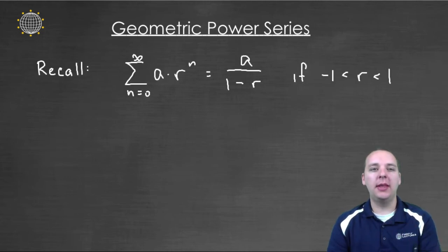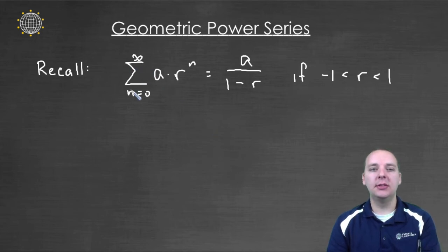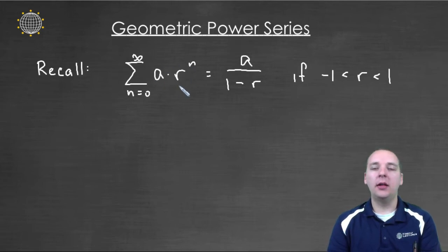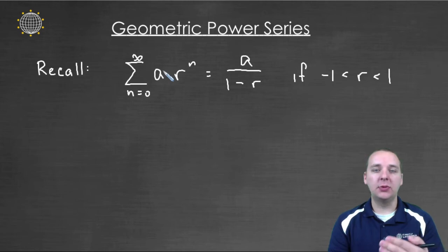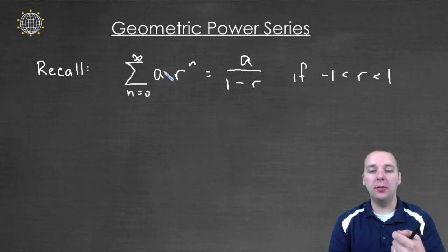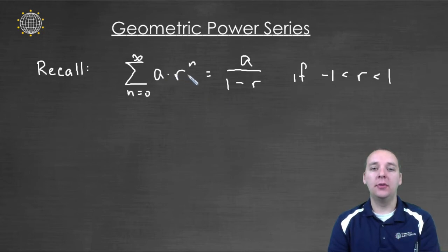Let's first remember what a geometric series looks like. This is the sum from zero to infinity of a times r to the n. These converge if r is between plus or minus one. And the geometric series test is one of the few tests that actually tells us what the terms add up to — it converges to a over one minus r.